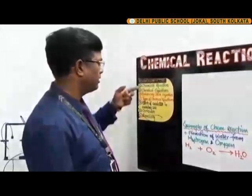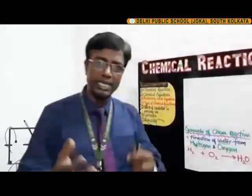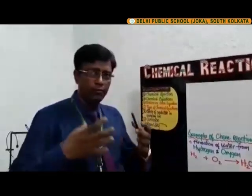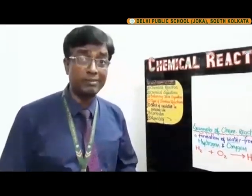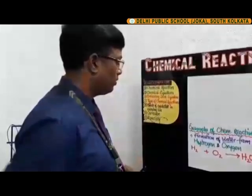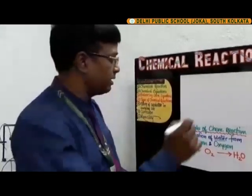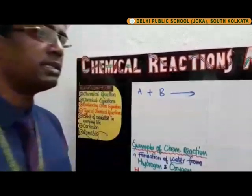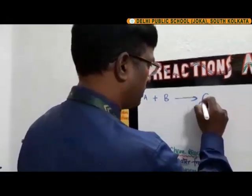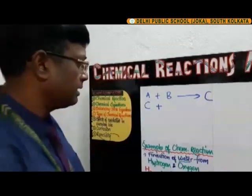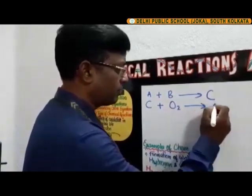Let's begin with chemical reactions. Chemical reactions take place in our day-to-day life — photosynthesis is a chemical change, respiration is another, and burning of a substance is another. When we burn coal in the presence of oxygen, a new substance, carbon dioxide, is formed. This new substance formed in a chemical reaction is called a product. We represent a chemical reaction as A plus B gives C — the participating substances give a new substance.